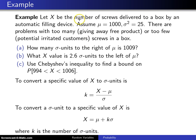So in this case we are being given the first two moments but no other information about the distribution. I will write over here the standard deviation is five screws going into the box and that will be used in Chebyshev's inequality.